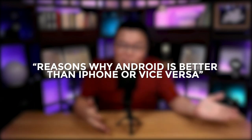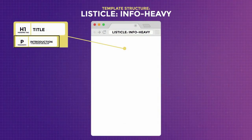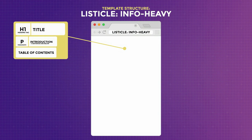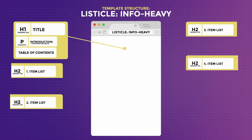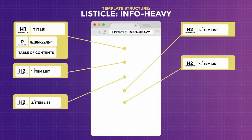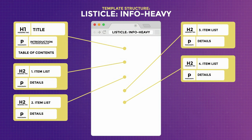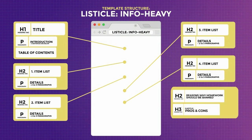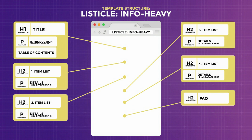For information-heavy listicles — like reasons why homework should be banned, reasons why Android is better than iPhone, or ways to improve productivity — the search intent is clear: the searcher wants a list of information. So you start with an introduction, followed by a table of contents depending on how long the article is, and then a list of information to satisfy the search intent. For each item, use H2 heading tags and add running numbers to tell search engines this is a list. In each description, have approximately 2–3 paragraphs going into detail. If you have something more to justify the topic — like pros and cons of banning homework — that additional information should come after the list, followed by the FAQ section. Always satisfy the search intent at the top.